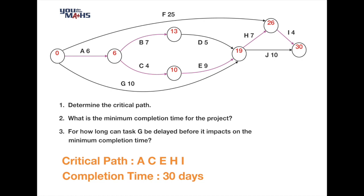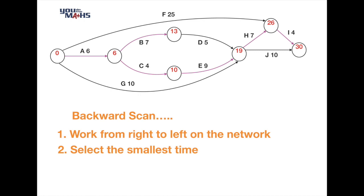To determine the completion time and critical path we used a forward scan. Now we'll perform a backward scan, which helps us identify possible delays in the network that won't impact the completion time. Working right to left, we select the smallest possible time. We start at the right-hand side and put 30 at the lower part of the final circle.